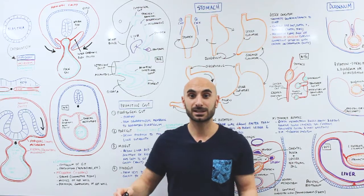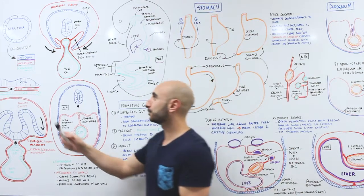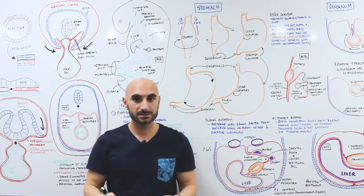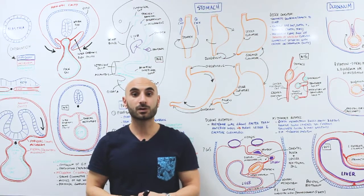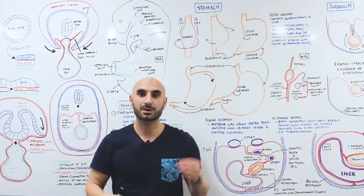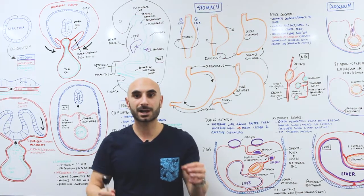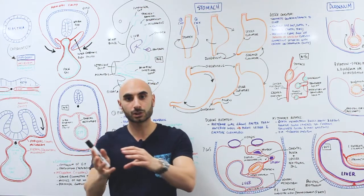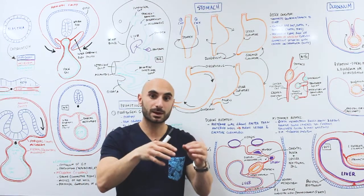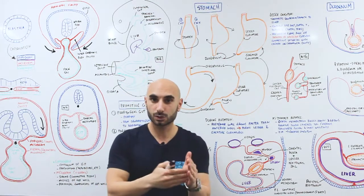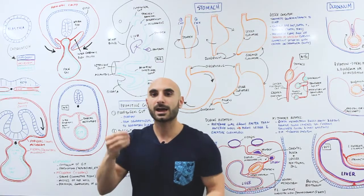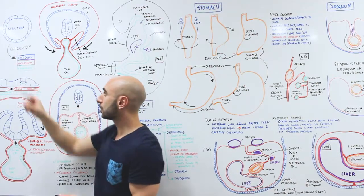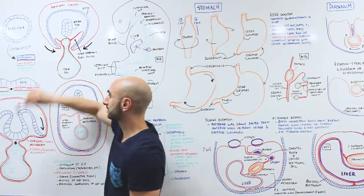We're going to begin at the beginning — at the blastula. The blastula is a ball of cells that's the result of fertilization. A sperm fertilizes an egg, that ball of cells travels down the uterine tube into the uterine canal, implants into the uterine wall, and a process of gastrulation will form three germ layers.